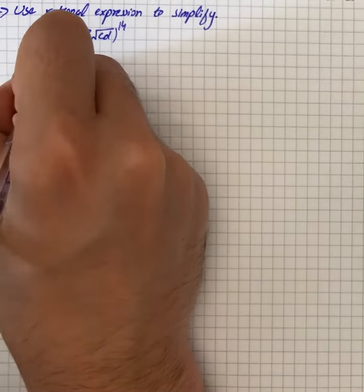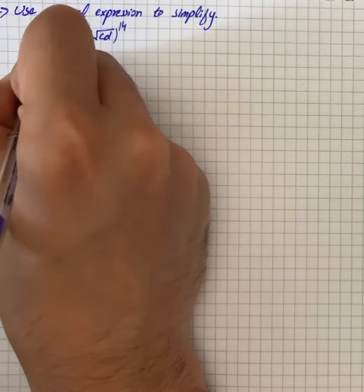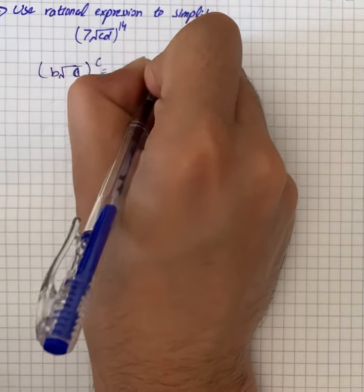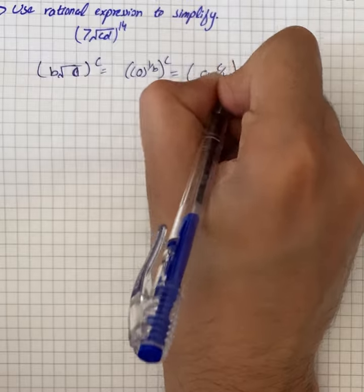So the property we are going to use is b under root a whole power c is equal to a raised to power 1 by b whole raised to power c, that is equal to a to the power c over b.